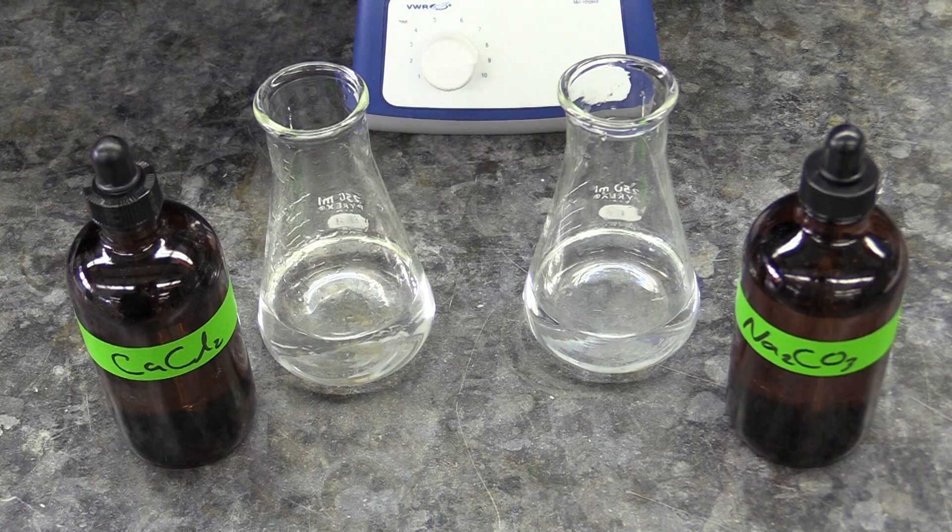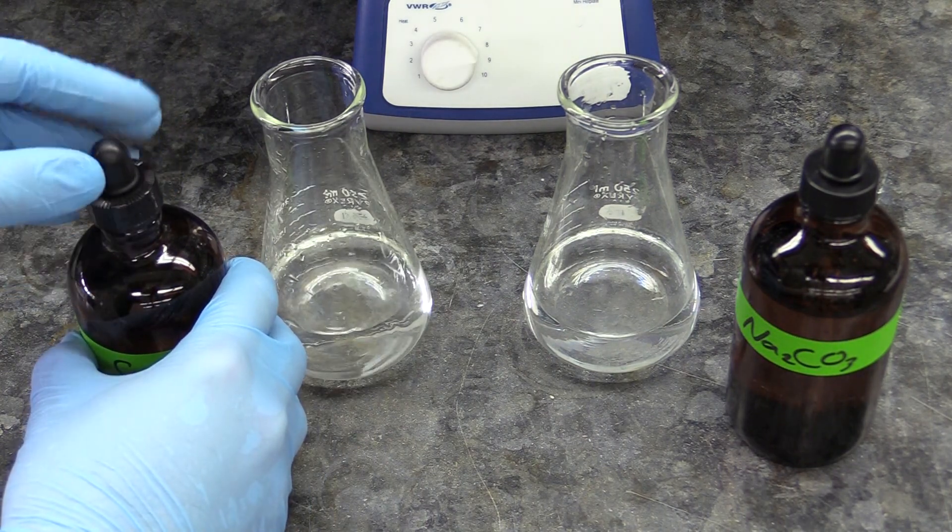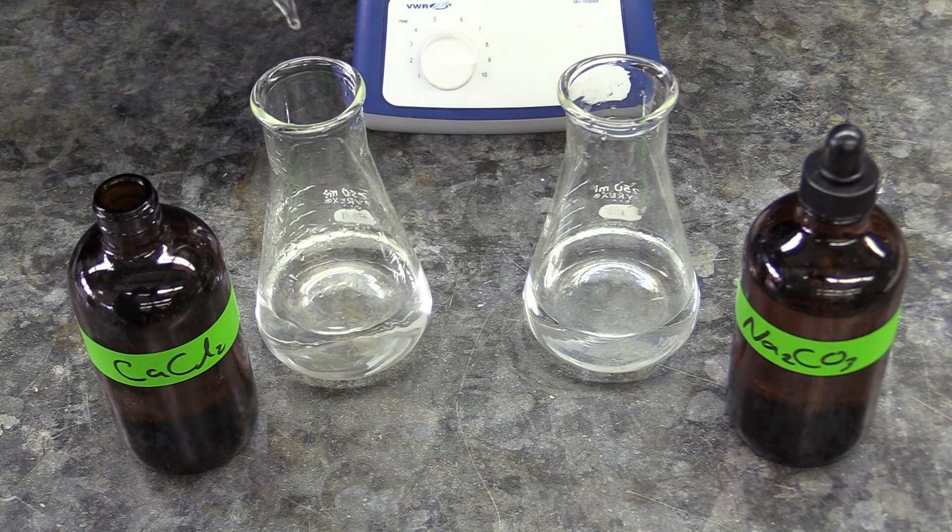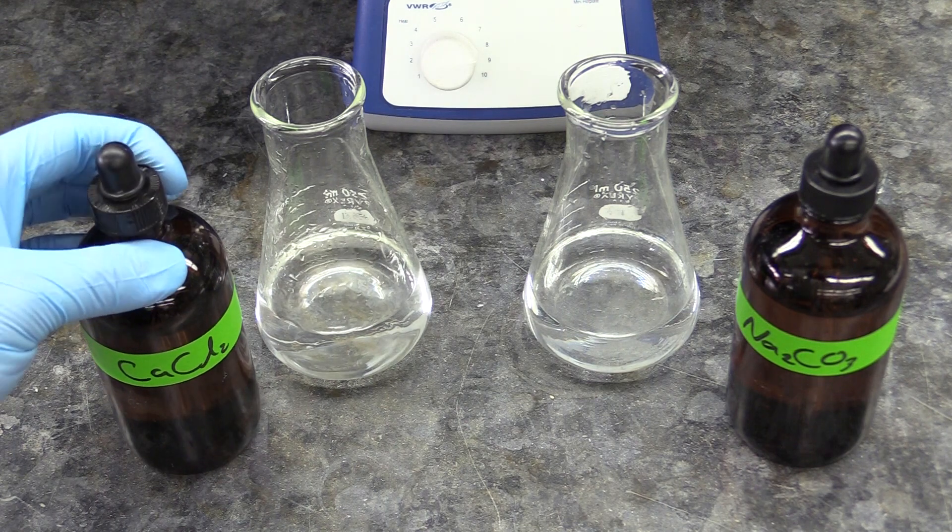While your first filter paper is drying, you can do the test to see which of the two salts in your mixture, the sodium carbonate or the calcium chloride dihydrate, was in excess. To do this, you're going to add a little extra calcium chloride to the flask from one trial and some extra sodium carbonate to the flask from the other.